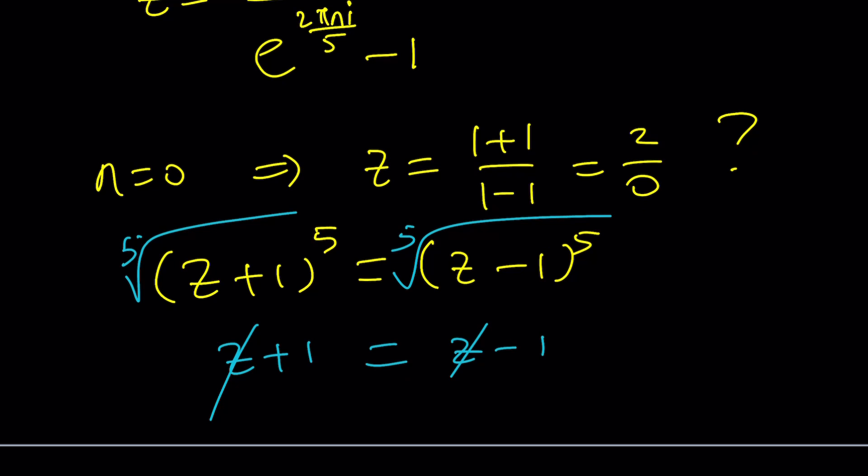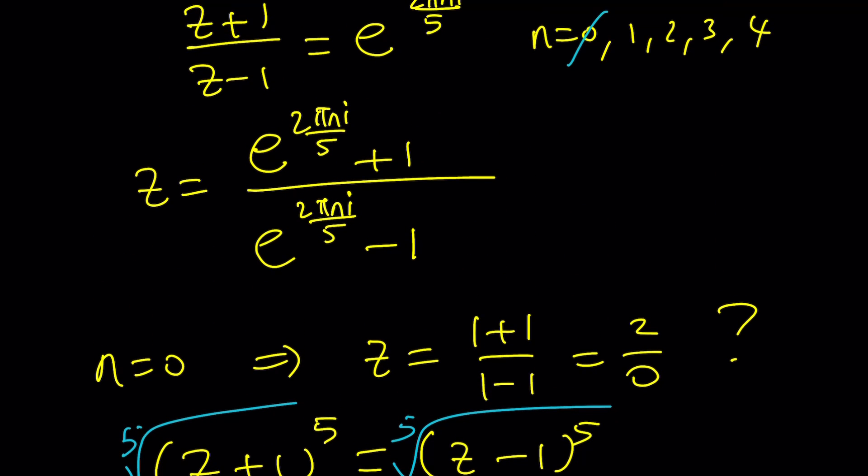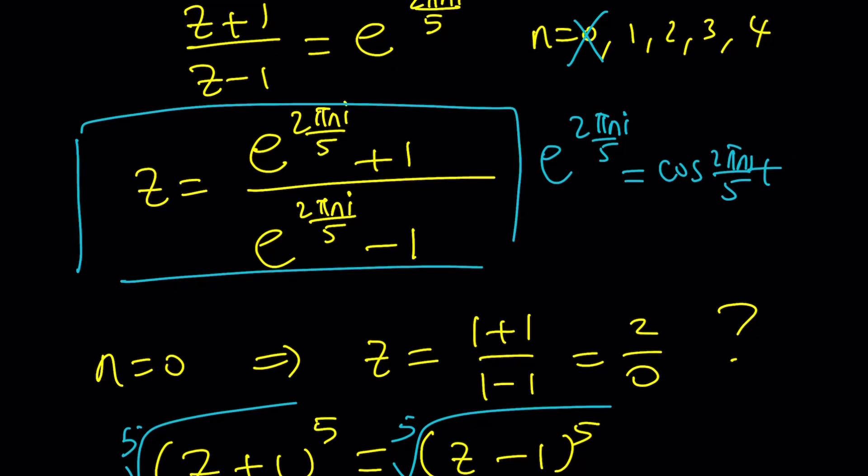But that's not the case, obviously, because we do have solutions. But this just means n cannot be 0. It can be anything else. By the way, what is e to the power 2 pi n i over 5? That's basically cosine of 2 pi n over 5 plus i times sine, so on and so forth.